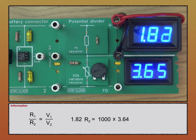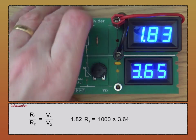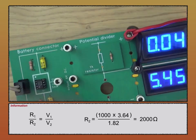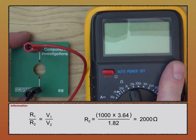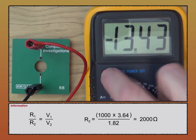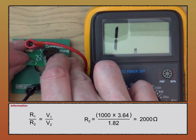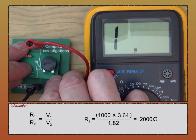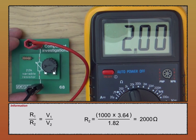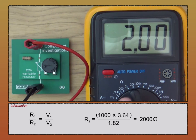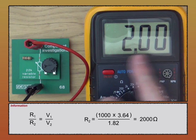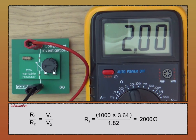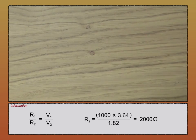This is a 1k resistor, so the variable resistor must be set to around 2,000 ohms. We can check that by taking it out and placing it into a component investigation board connected to an ohmmeter. The ohmmeter is set to measure up to 20,000 ohms — measuring in kilohms — and it's reading 2,000 ohms, exactly as we expected.